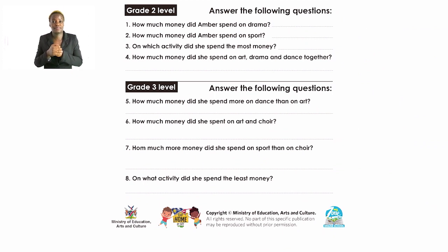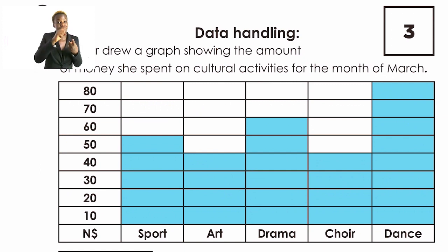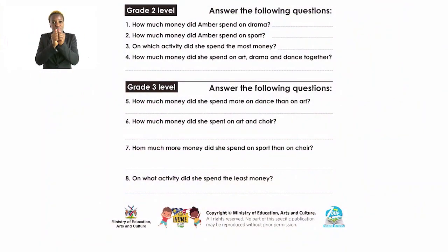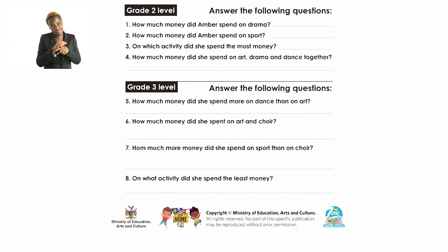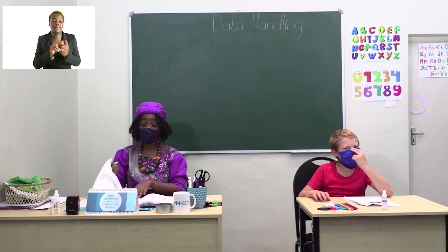Let's do number six together: how much money did she spend on art and choir? Art is 40 Namibian dollars and choir is also 40 Namibian dollars. The question asks for the total of both, so we add them together: 40 plus 40 equals 80 Namibian dollars. Now practice numbers seven and eight on your own, and read carefully to understand the questions.